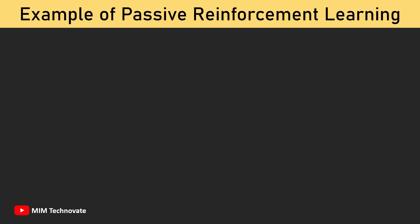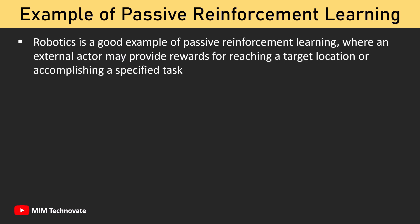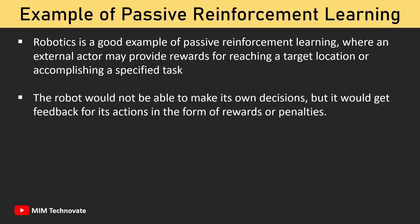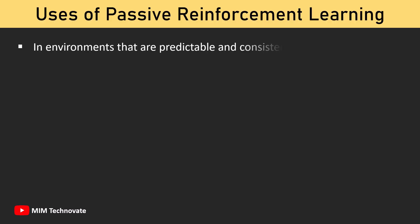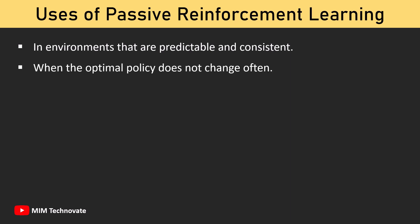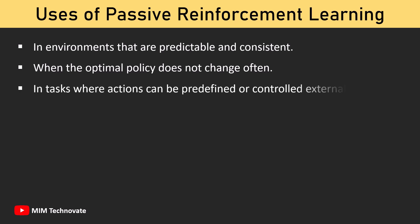Robotics is a good example of passive reinforcement learning, where an external actor may provide rewards for reaching a target location or accomplishing a specified task. The robot would not be able to make its own decisions, but it would get feedback for its actions in the form of rewards or penalties. Passive Reinforcement Learning is used in environments that are predictable and consistent, when the optimal policy does not change often, and in tasks where actions can be predefined or controlled externally.